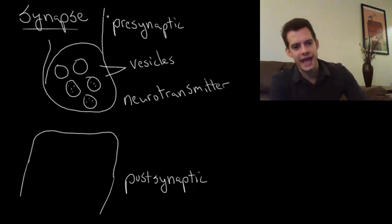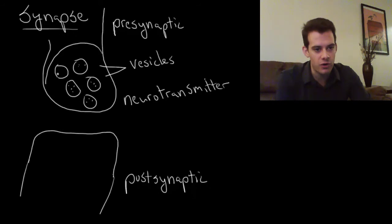So when the action potential reaches the terminal button, it causes these vesicles to release the neurotransmitter into the synapse. The neurotransmitter flows out of the terminal button into the gap between the two neurons.